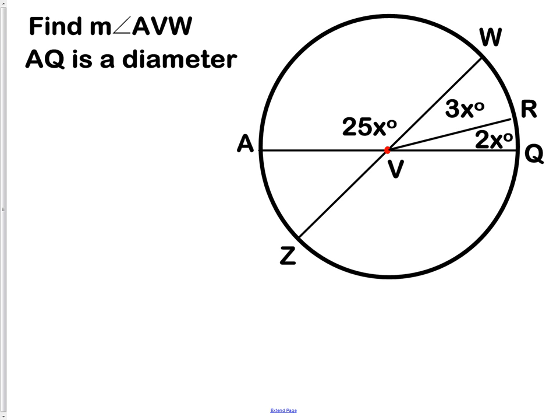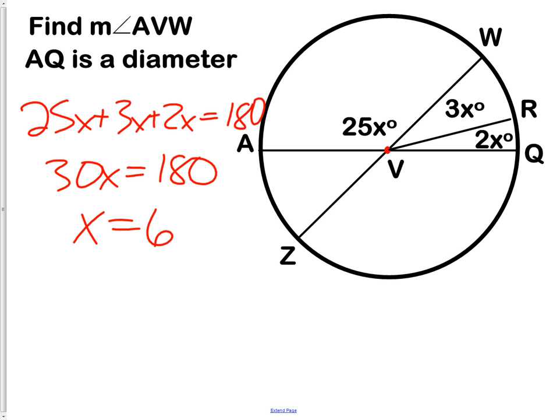Here's our first question. It says, find the measure of angle AVW, given that AQ is a diameter. So we want to find AVW. AVW would be this angle right here. It is a central angle because we know that AQ is a diameter, so that's half our circle and it goes to the center point V. That also gives us the way to solve it. We know that since this is a diameter, this part here has to be 180 degrees. That's how we'll solve it. 25X plus 3X plus 2X equals 180 degrees. We have 30X equals 180, which gives us X equals 6.